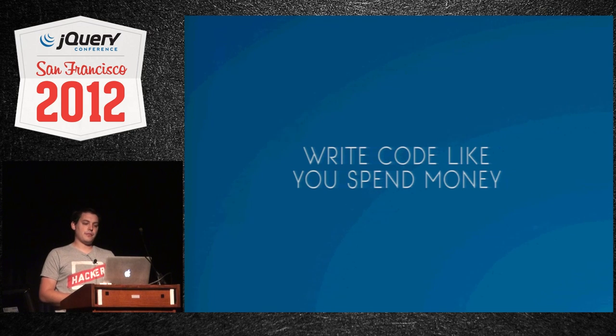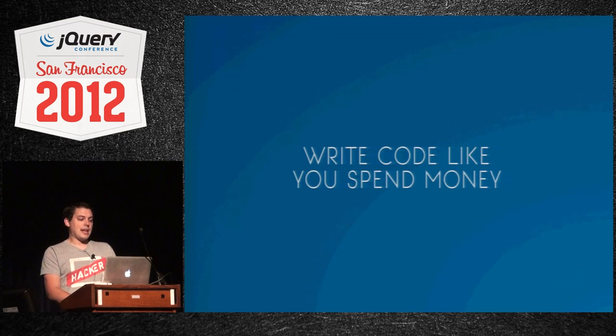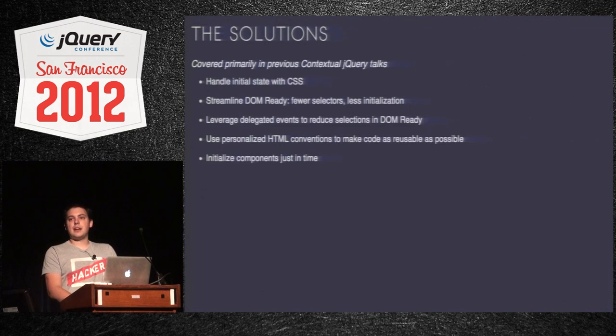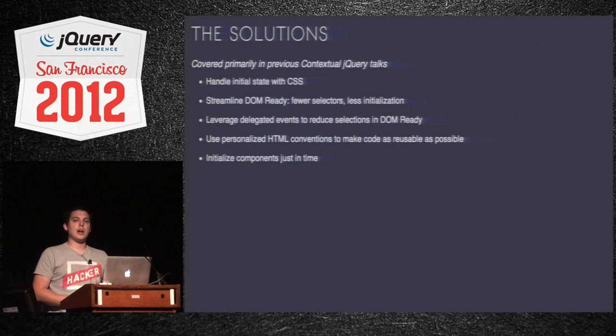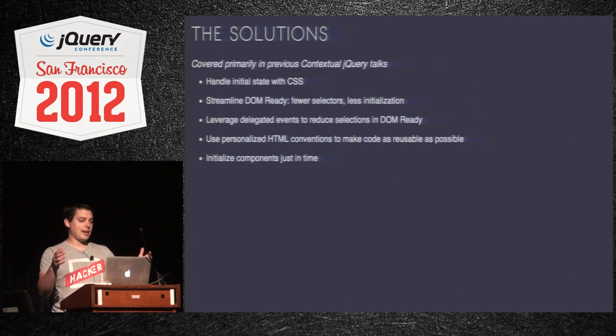What contextual jQuery tries to get you to do is focus your efforts on what you anticipate the user is going to be doing, what they might need to interface with, and get those things ready at that point — so you have very fast load times but stuff still works. The videos available in the slide notes will cover some of this in greater detail.